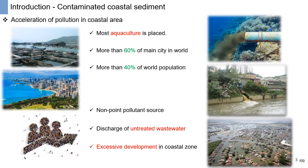However, this coastal area is very contaminated nowadays due to accelerating pollution. Most aquaculture is placed in this coastal area, and more than 60% of major world cities and more than 40% of the world population live here. This generates non-point pollutant sources introduced through plowed earth in rainy seasons or storms. Discharged untreated wastewater and excessive development in the coastal zone are also major anthropogenic causes of contamination.